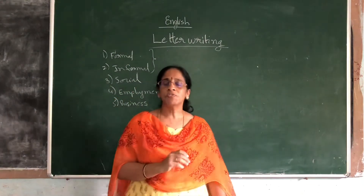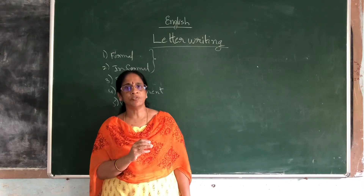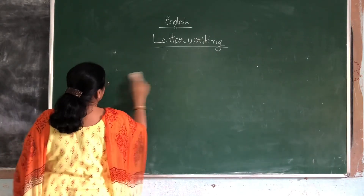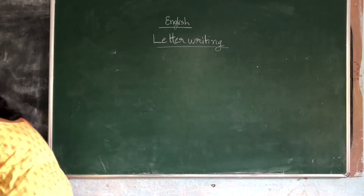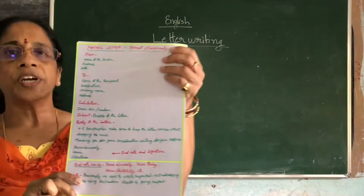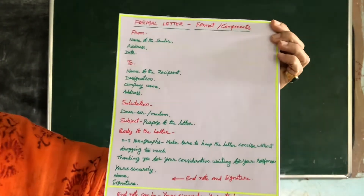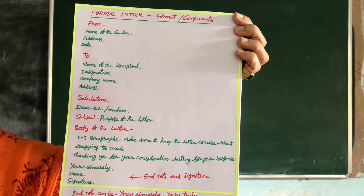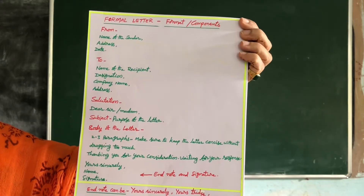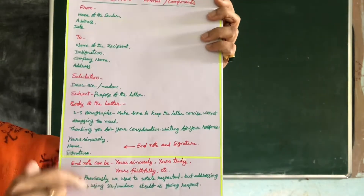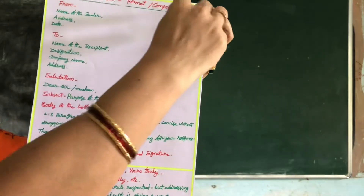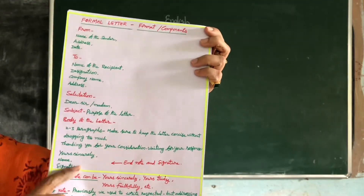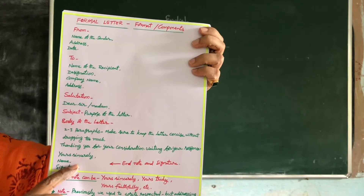Now look at the format for writing a formal letter — the components and pattern to be followed. First is the 'from address' written on the right top corner: name of the sender, address, and date. Don't forget to put commas and full stops. Leave a line space, then write the 'to address' — the name of the recipient. In official letters, you may need to mention both designation and name, or sometimes only designation is enough, such as when writing to the municipal commissioner.